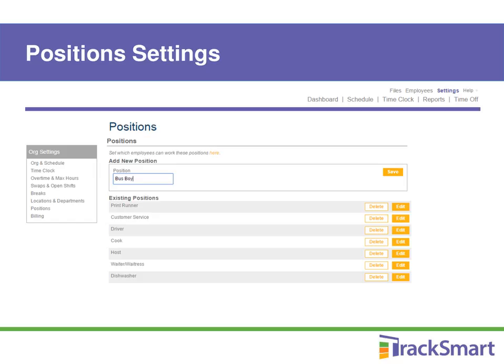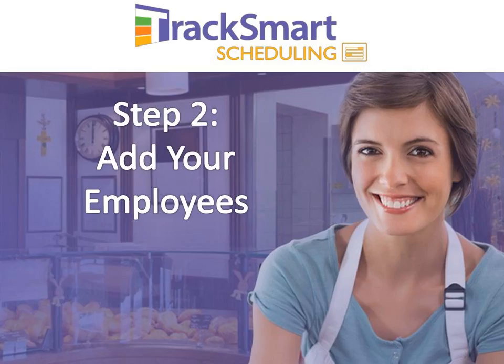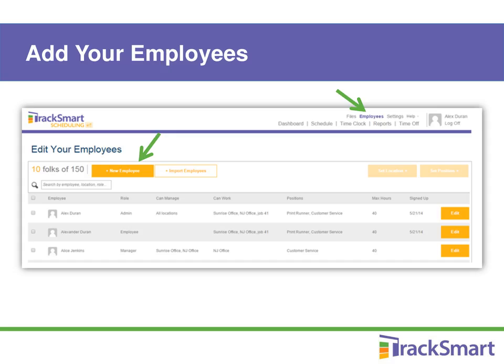So that's it for settings. Now that you've seen how flexible TrackSmart Scheduling can be to fit how your business works, we're ready to move on to adding your employees. When you first signed up, you may have entered just a few employees as suggested. Now you can go in and add all your employees and some more details that will help with your scheduling. To add or edit employees, click on the Employees link in the upper right menu. You'll see you're already loaded in as an administrator, and you'll also see any employees you added during the initial sign-up process.